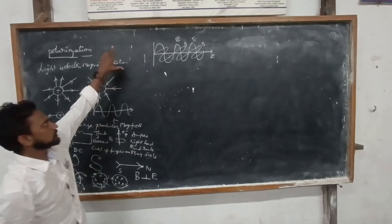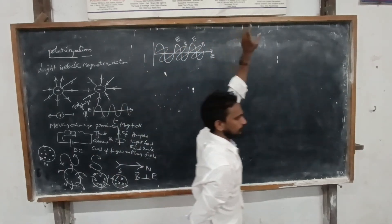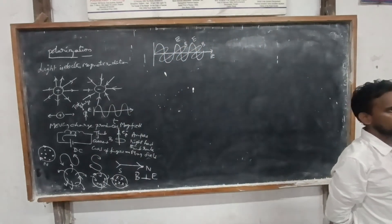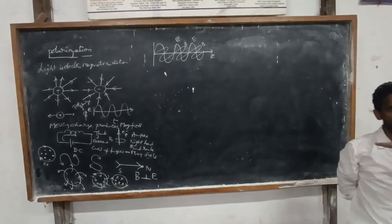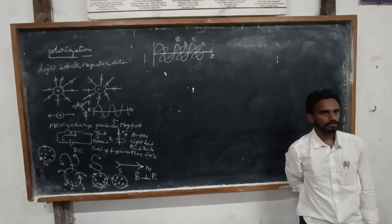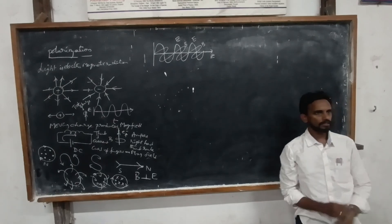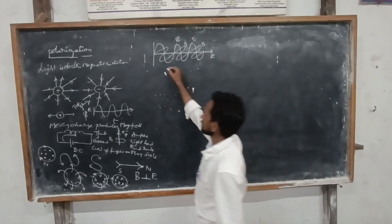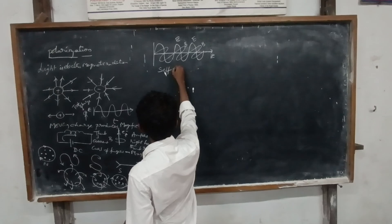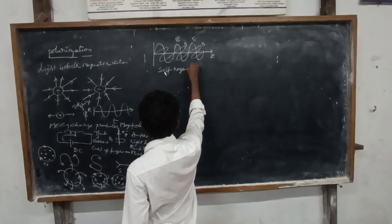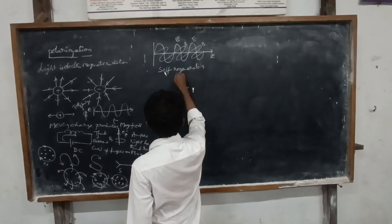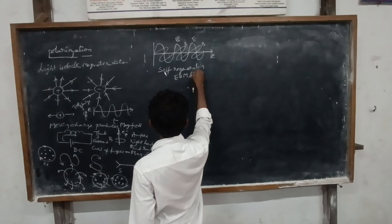On the plane, oscillations are electric field oscillations. Perpendicular to the plane, oscillations are magnetic field oscillations. Both are self-regenerating — it is a self-regenerating electric and magnetic field.